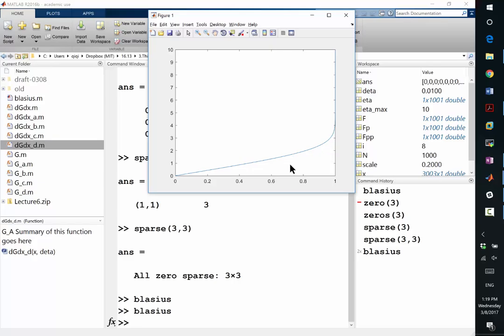So let's try to interpret the solution physically. The y-axis is eta. The x-axis is a non-dimensional version of the streamwise velocity. Do we remember what eta means and what the non-dimensionalized streamwise velocity means?